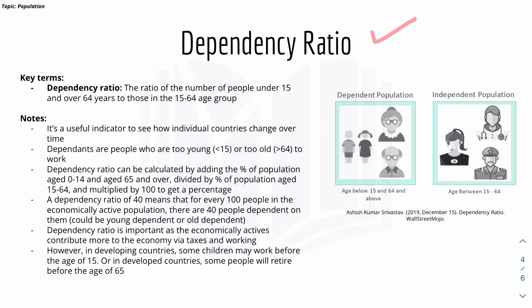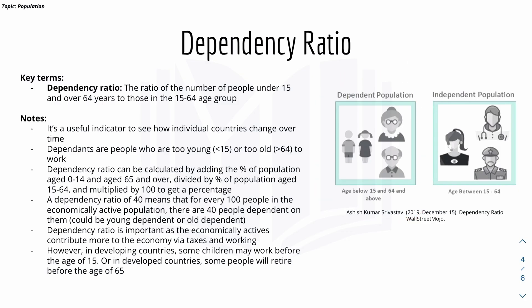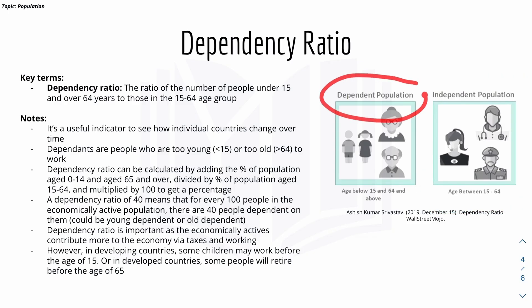Moving on to dependency ratio — the dependency ratio is the ratio of the number of people under 15 and over 64 years to those in the 15 to 64 age group. The dependent population are people aged 15 and below and 64 and above, because they can't work and can't contribute to the economy, so they depend on the working population. The working population — those aged 15 to 64 — are independent as they contribute to the economy. The dependency ratio is calculated by adding the percentage of population aged 0–14 and 65+ divided by the percentage aged 15–64, multiplied by 100.